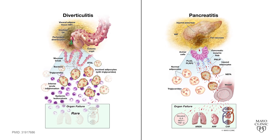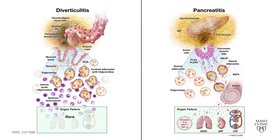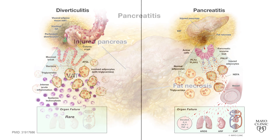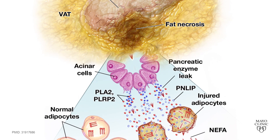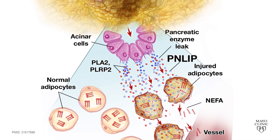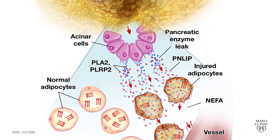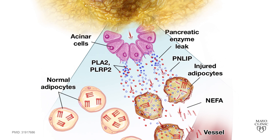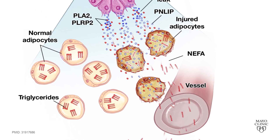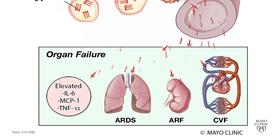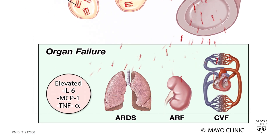Here we study the role of intra-abdominal fat, or visceral fat, in worsening acute inflammation, causing organ failure, and sadly, sometimes causing death. The study shows that the main pancreatic lipase, PNLIP, can leak out of the damaged pancreas and cleave large amounts of abdominal fat to fatty acids. These can then cause intense systemic inflammation, organ failure, and can reduce survival. We start by comparing two common diseases: acute pancreatitis and acute diverticulitis.